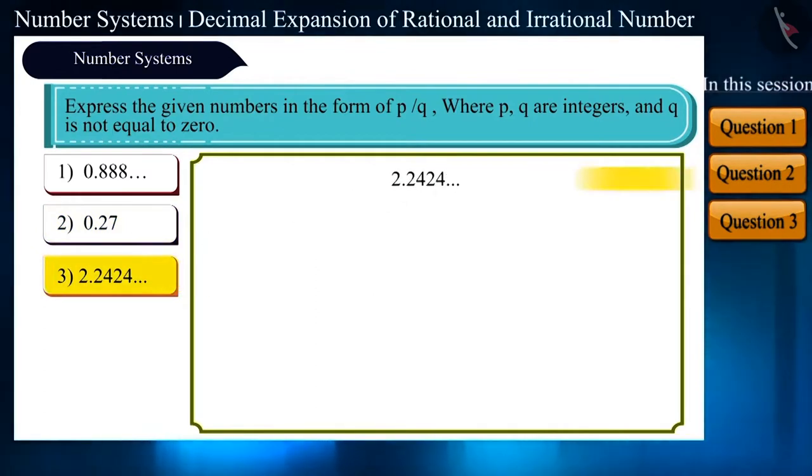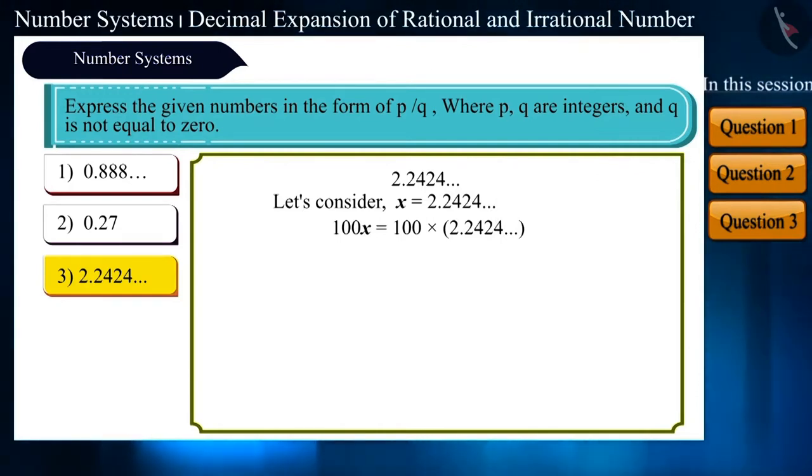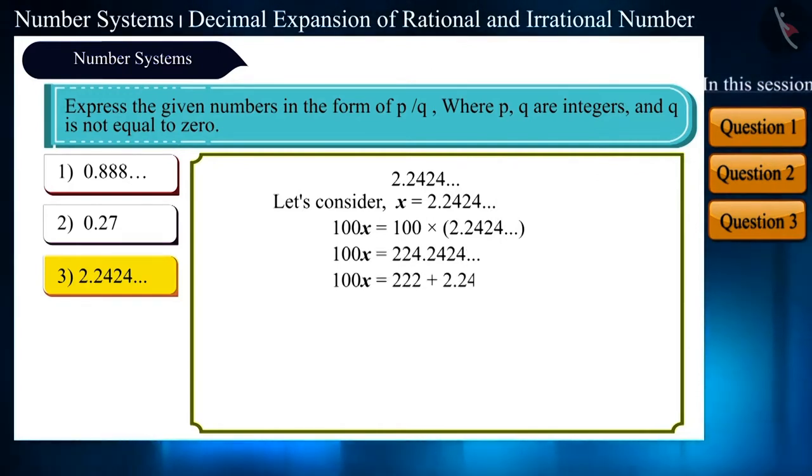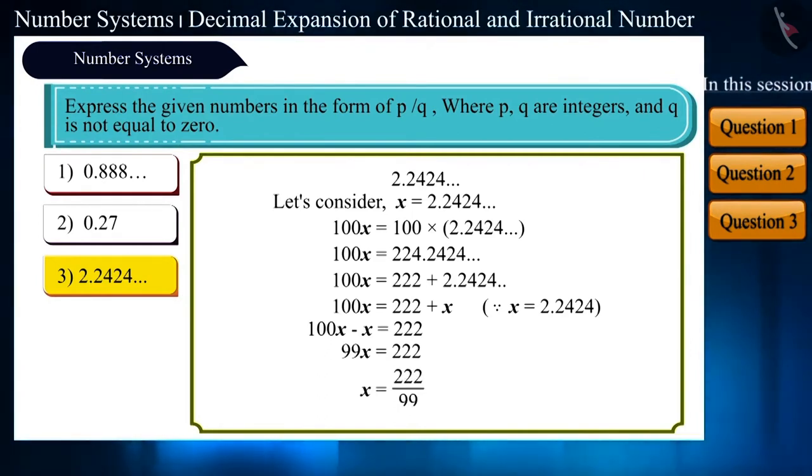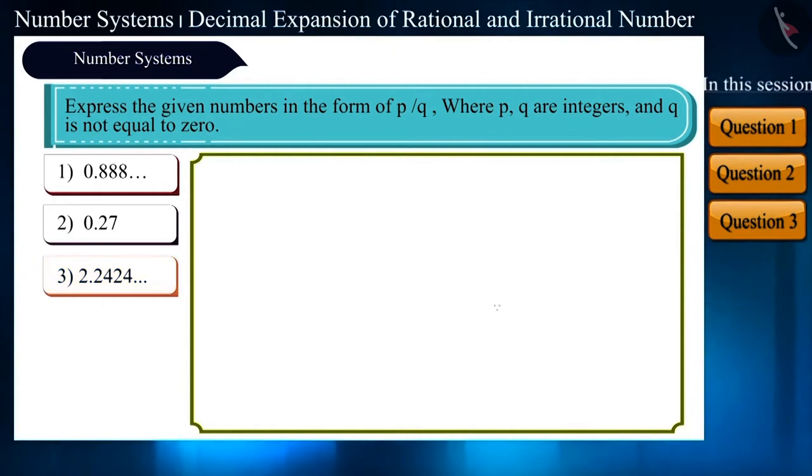Let's take the third number, 2.2424. Let's consider it as x. In this number, two numbers, that is 2 and 4, are getting repeated after the decimal. So, here, we will multiply by 100 and solve it in this way. We get x is equal to 222 by 99.